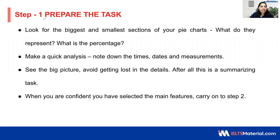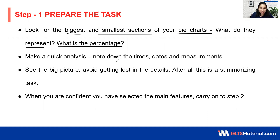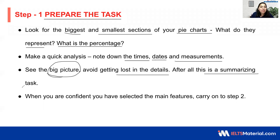Starting with step 1, which is called preparing the task, where you will be giving answers to the initial questions. Look for the biggest and smallest sections of the pie chart — what do they represent and what is the percentage? Make a quick analysis and note down the times, dates and measurements. See the big picture and avoid getting lost in the details, as this is a summarizing task. When you are confident you have selected the main features, carry on to step 2.